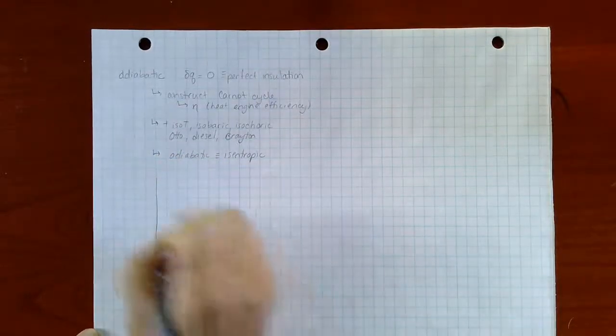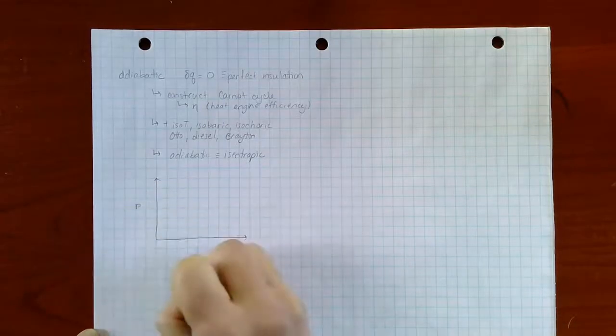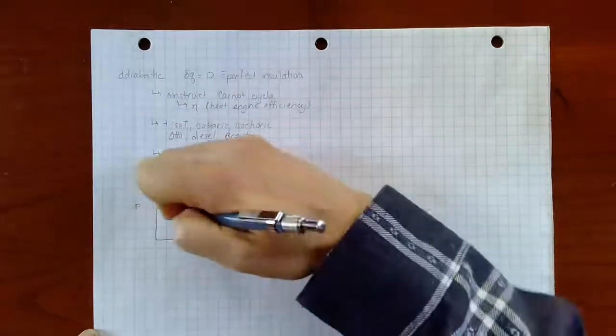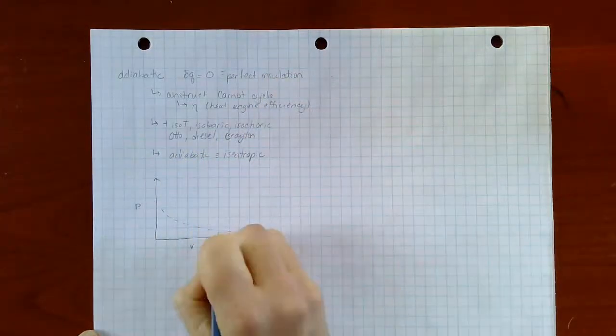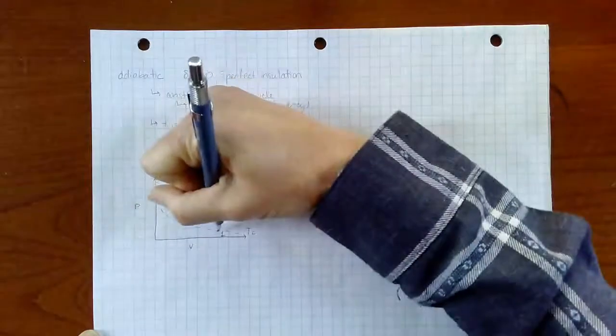Again, we're going to start by drawing a pressure volume diagram and let's reference our old friend, an isothermal process. We'll do compression starting from some state one to some second state.